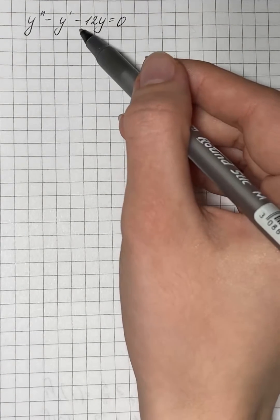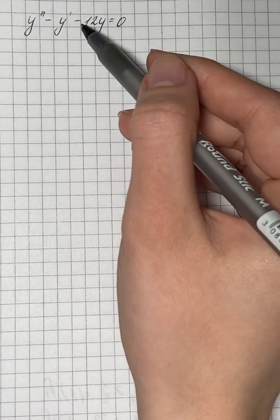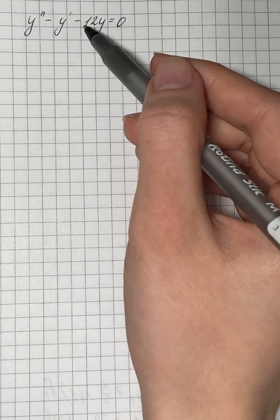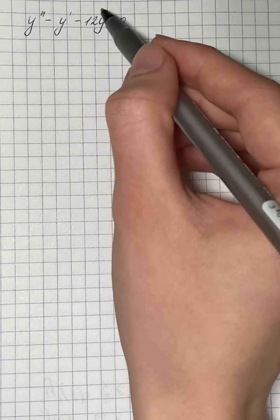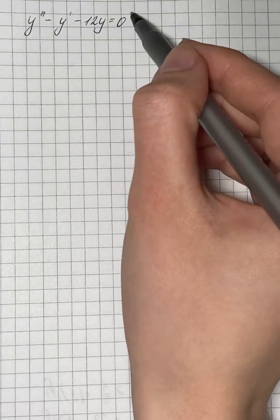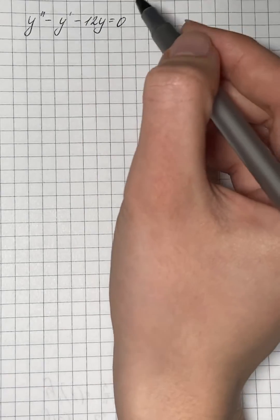The given equation is a linear second order homogeneous differential equation, and we need to find the general solution. In order to find the general solution of the given differential equation, it is enough to find the complementary solution.